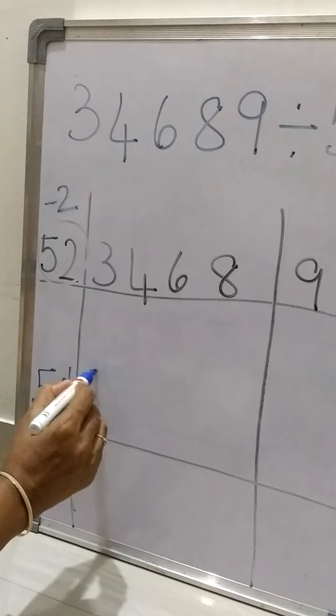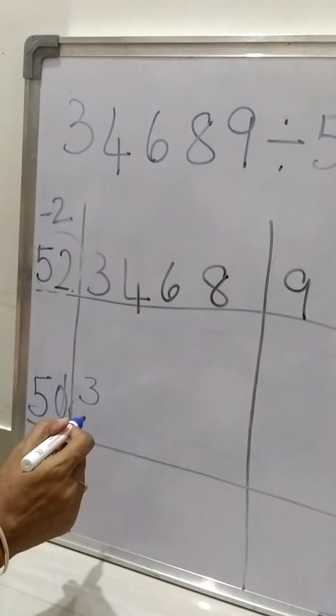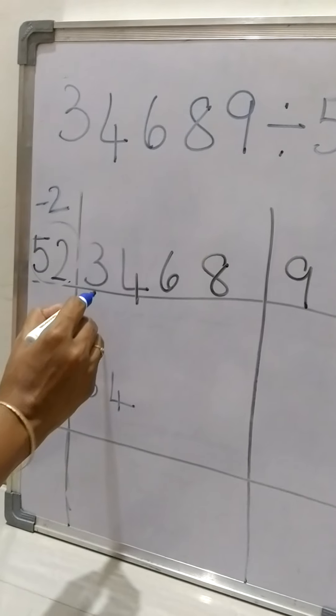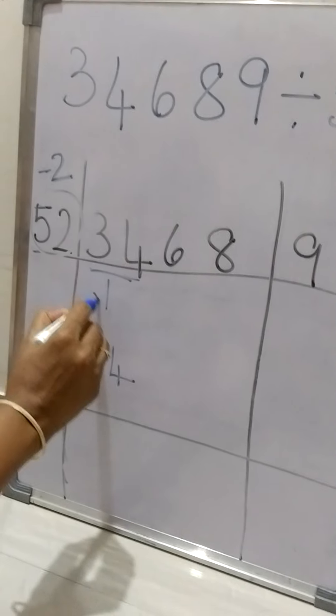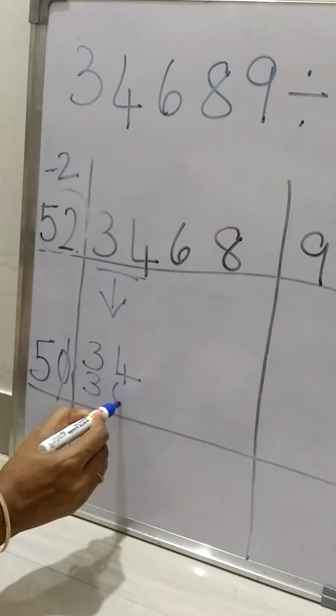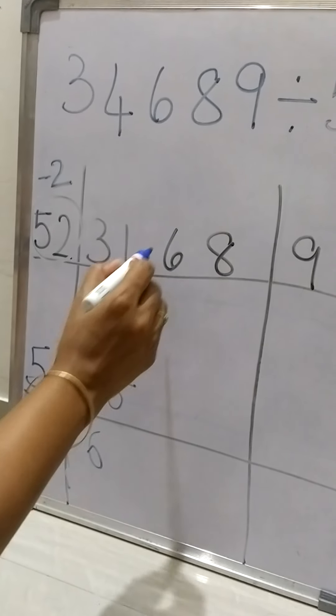Now we'll take 3 down. We cannot divide 5 with 3, so we're going to take 4 down again. And now it will be 5 sixes, that's 30, we are going to minus.